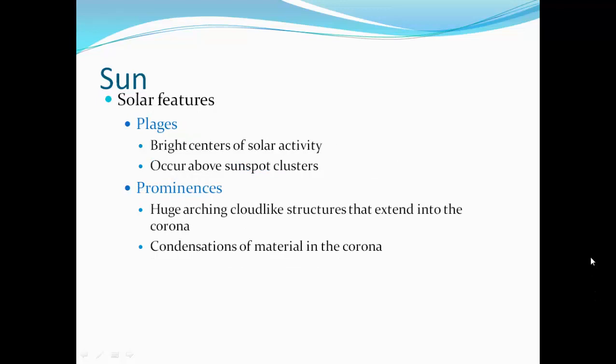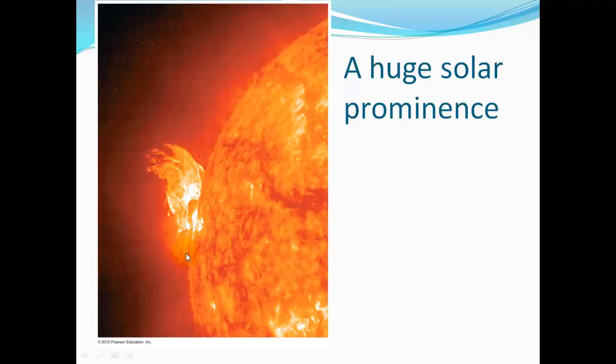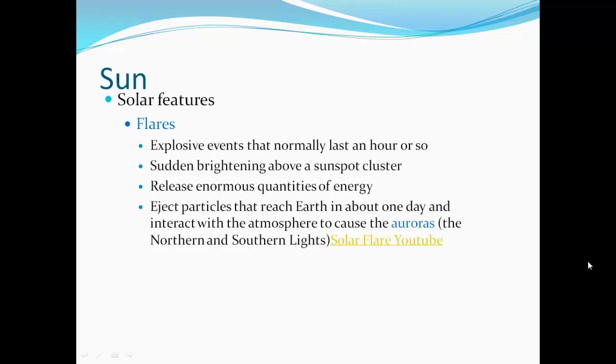Plagues are bright centers of solar activity. They occur above sunspot clusters. Prominences are huge arcing cloud-like structures that extend into the corona—condensations of material in the corona. Here's a huge solar prominence. Flares are explosive events that normally last an hour or so. The sun brightens above the sunspot cluster, releasing enormous quantities of energy, ejecting particles that reach the Earth in about a day and interact with the atmosphere to cause auroras—the northern and southern lights.